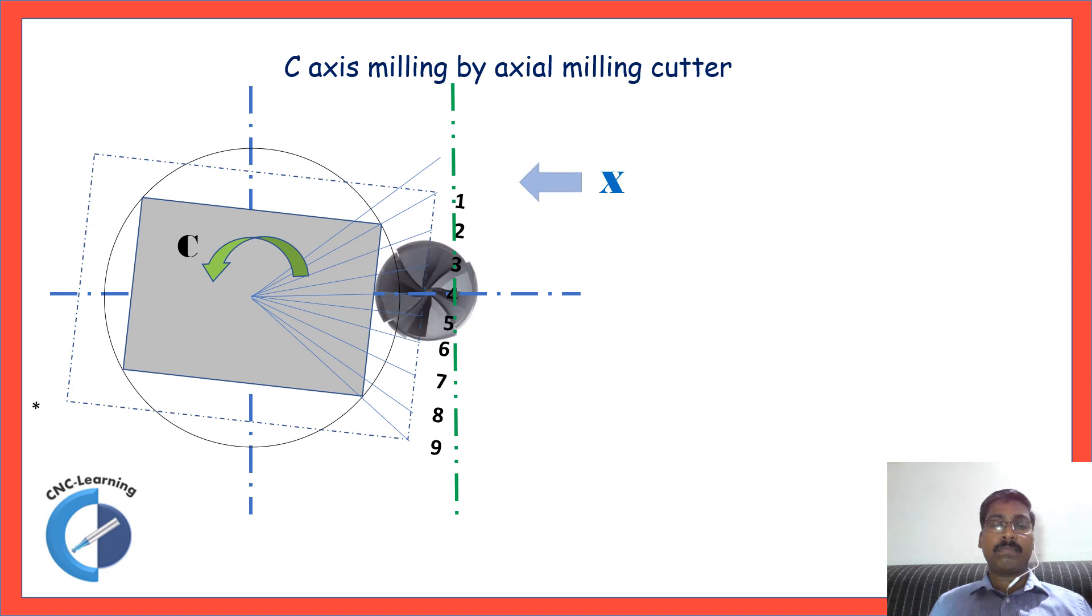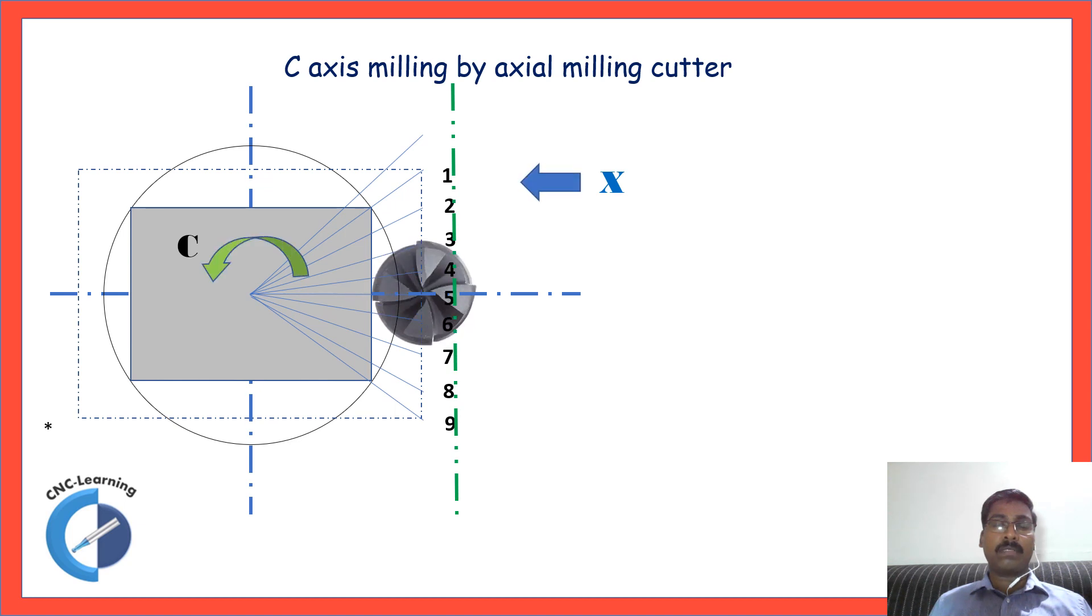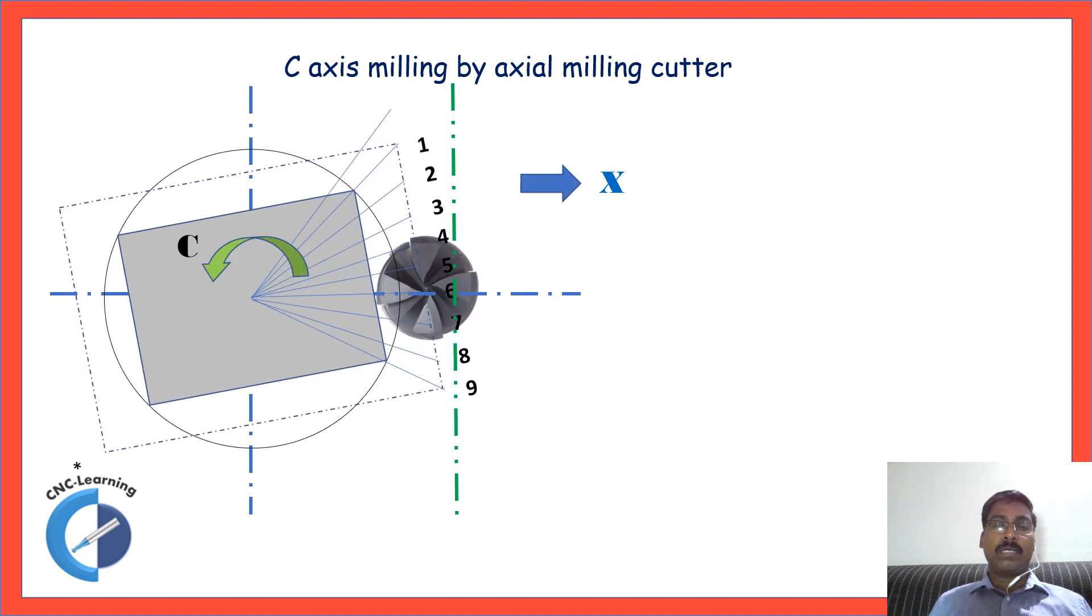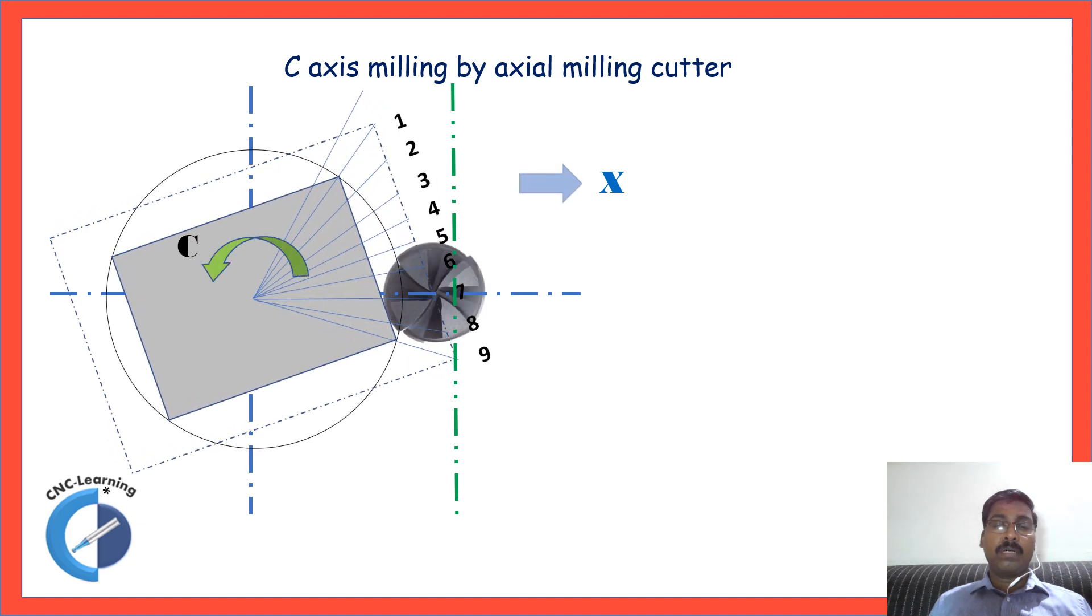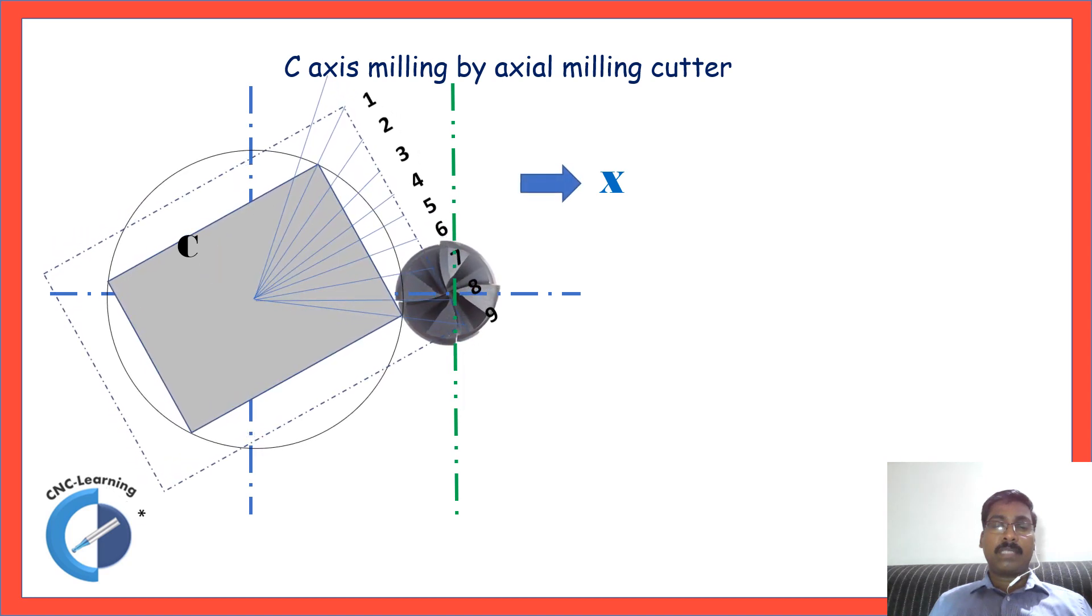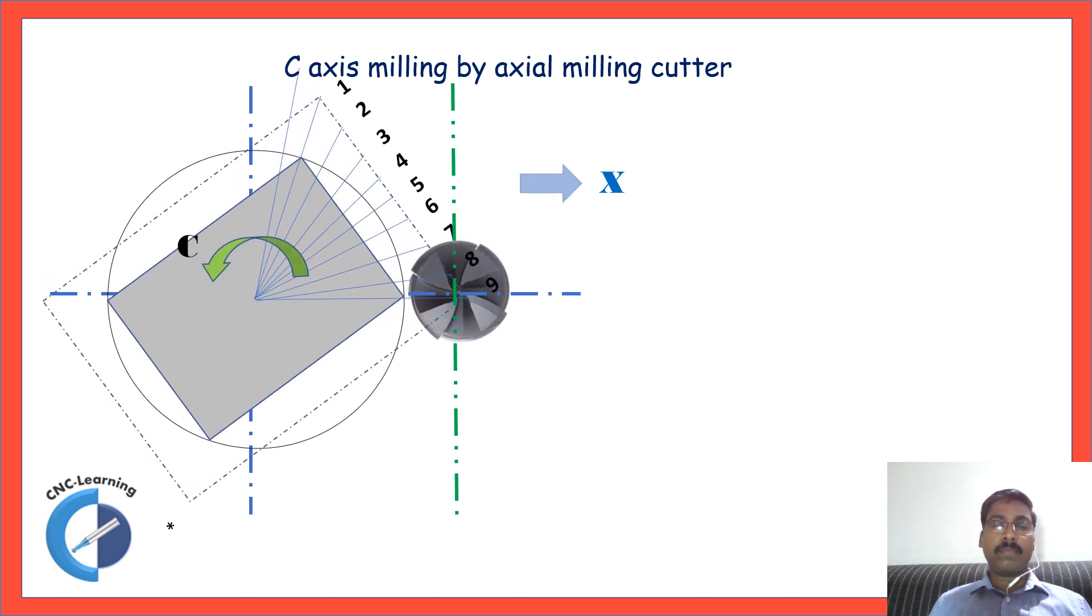Observe the tool motion. Now X axis is moving towards the center and the C axis is rotating to achieve the coordinates. Now it started moving outside so it is going outside the center. This is how the C axis milling is done by axial milling cutter.